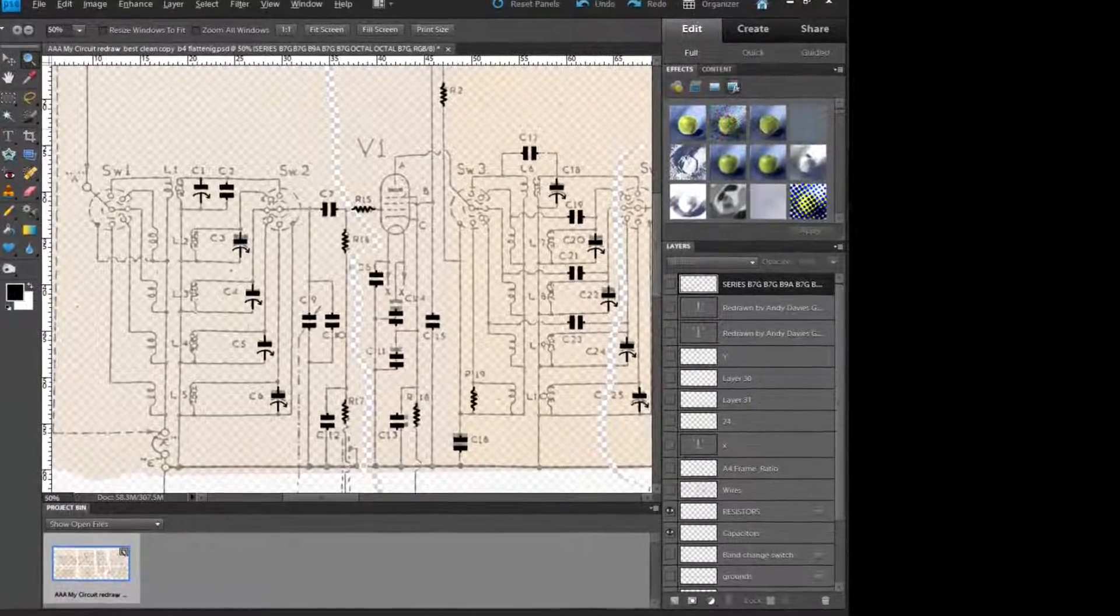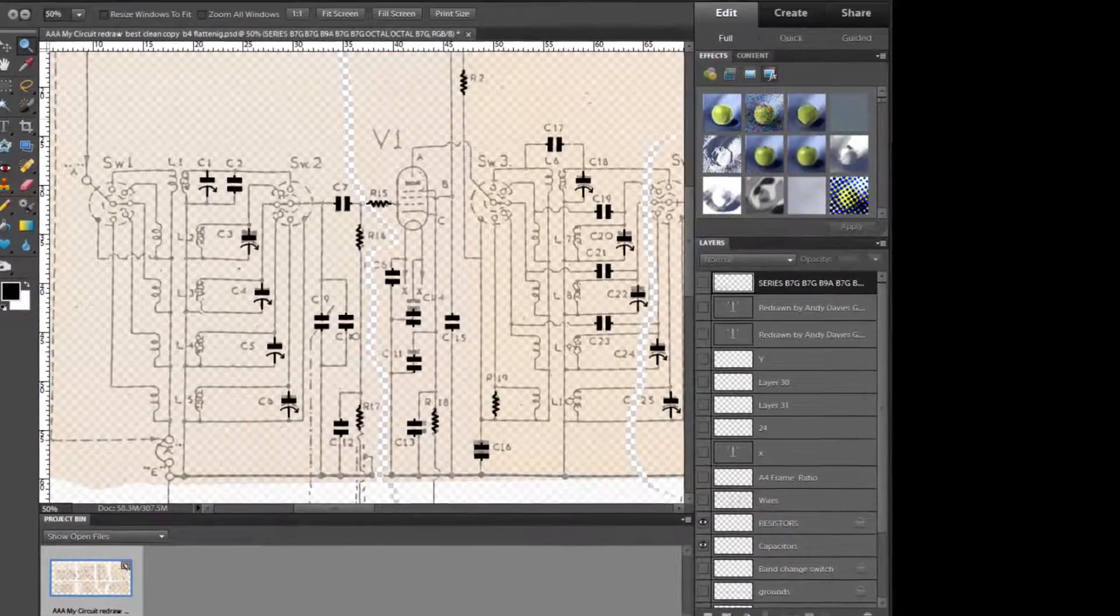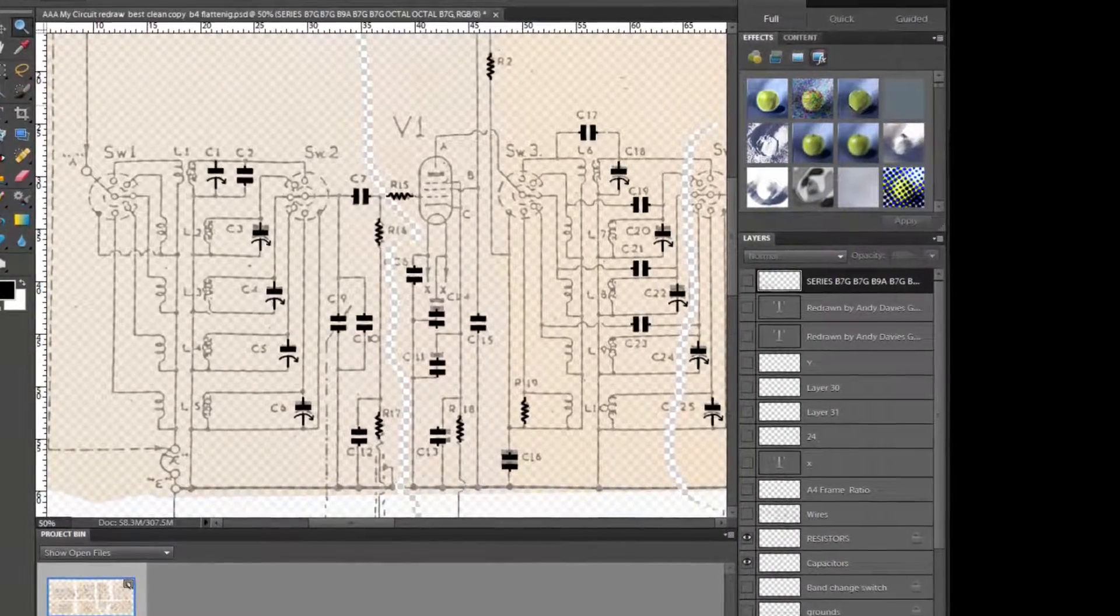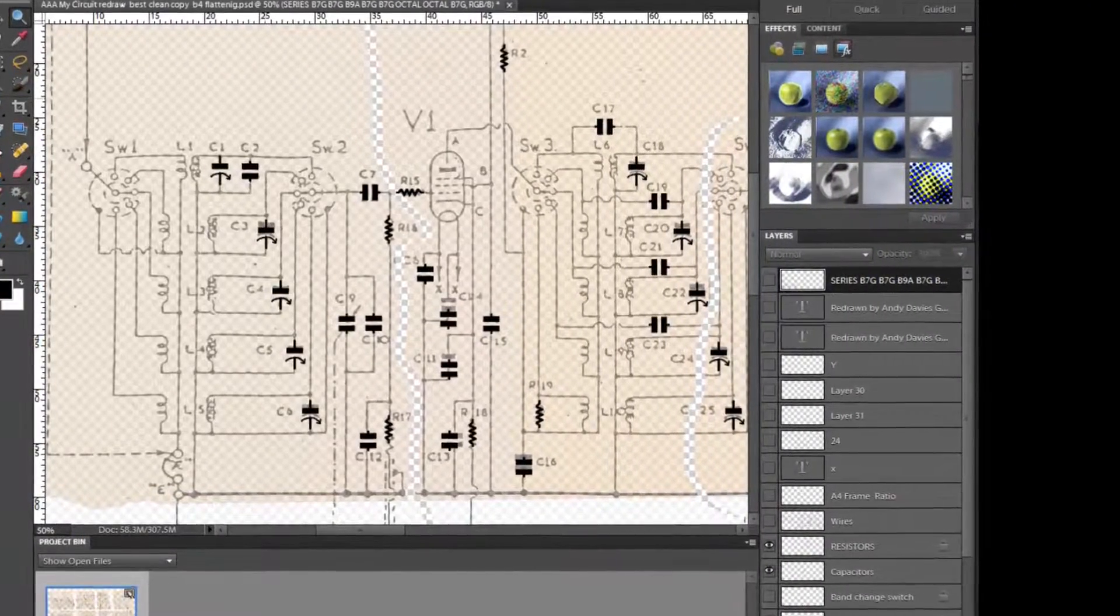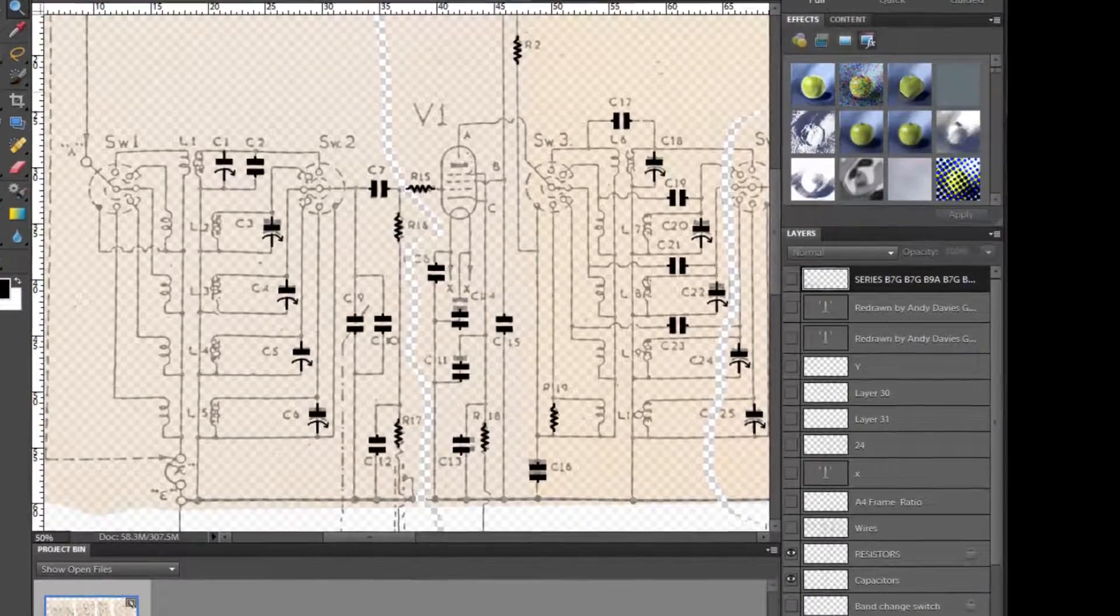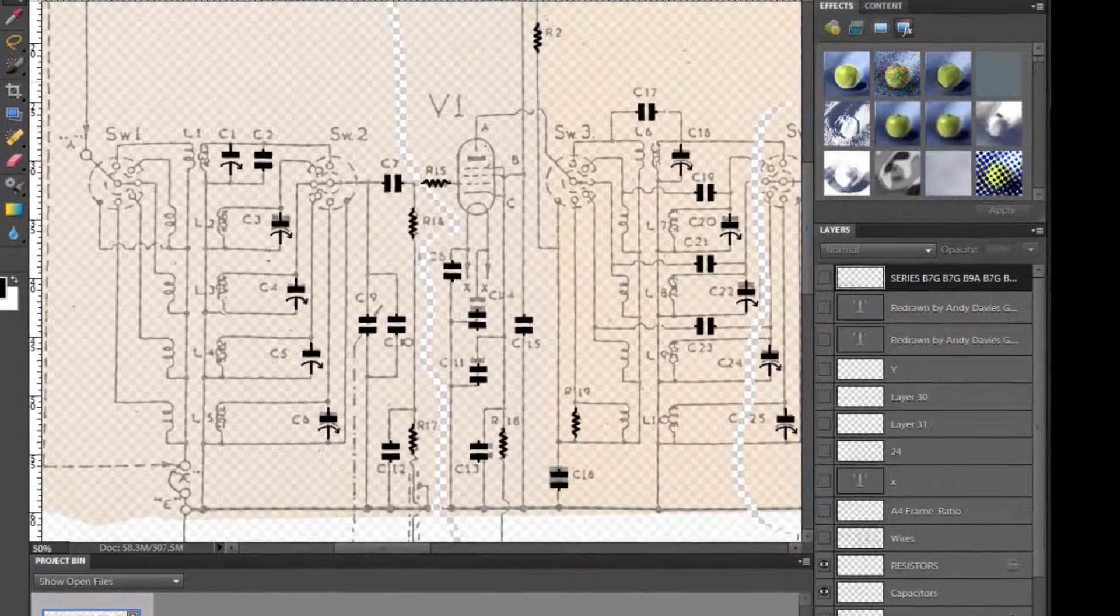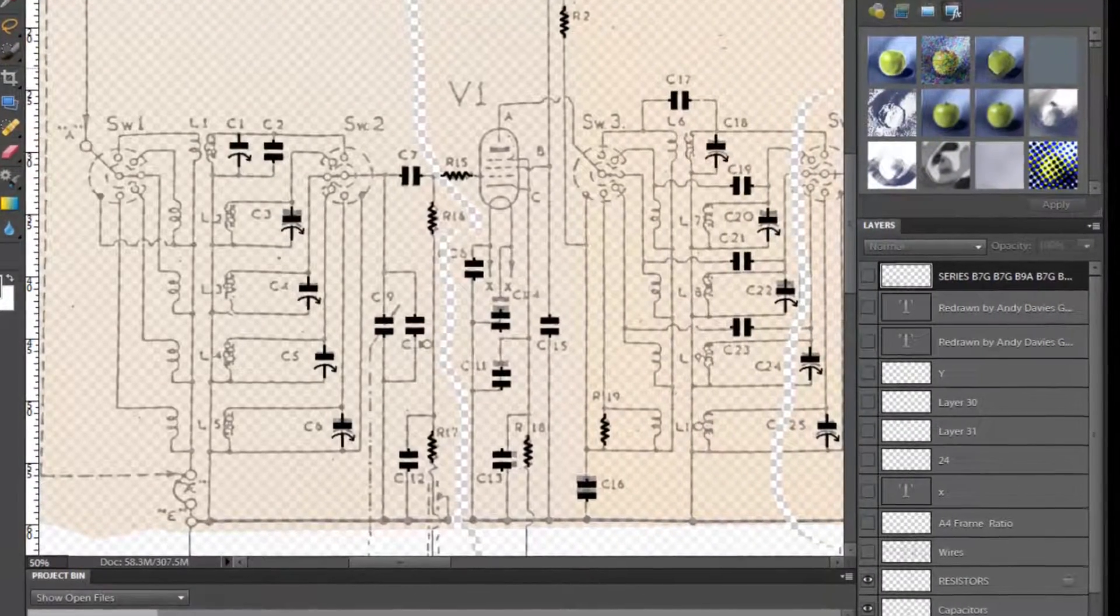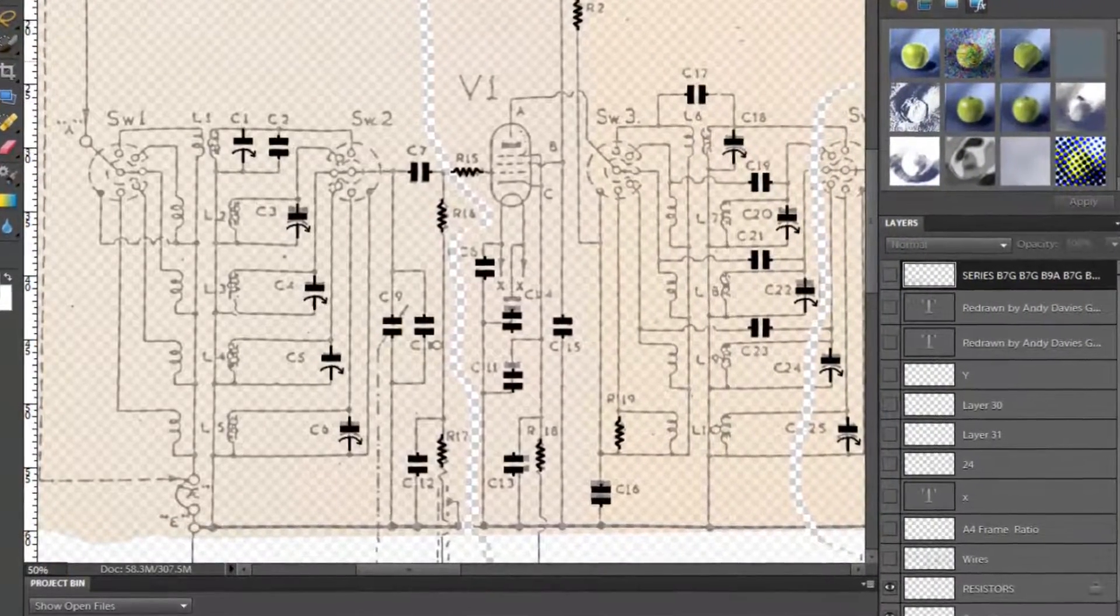I created multiple layers for capacitors, resistors, coils, switches, valves, etc. And then drew one component—so I drew one capacitor and then copied and pasted it on its layer, simply tracing over the draftsman's original drawing.